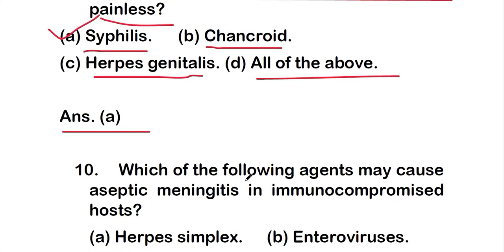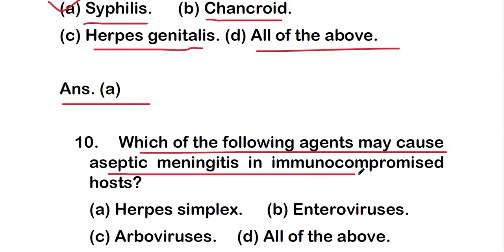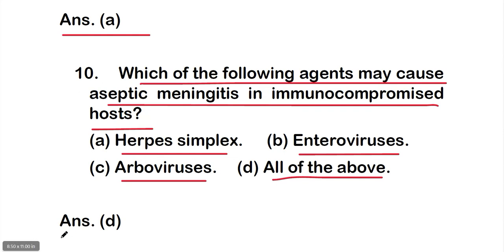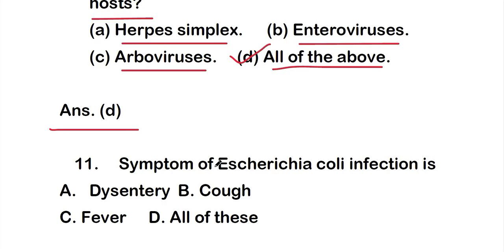Question 10: Which of the following agents may cause aseptic meningitis in an immunocompromised host? Options: option A: herpes simplex virus; option B: enterovirus; option C: arbovirus; option D: all of the above. The right answer is option D — all of these viruses may cause aseptic meningitis in an immunocompromised host.